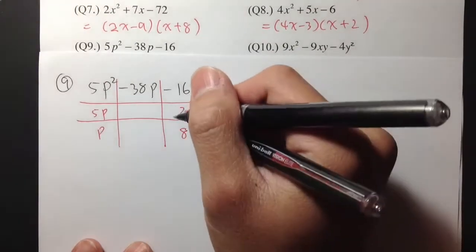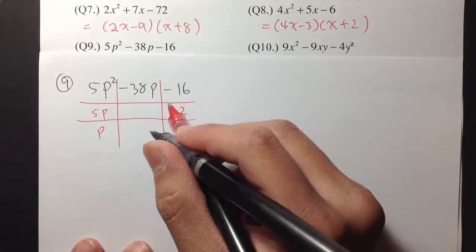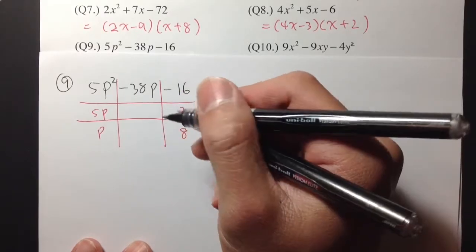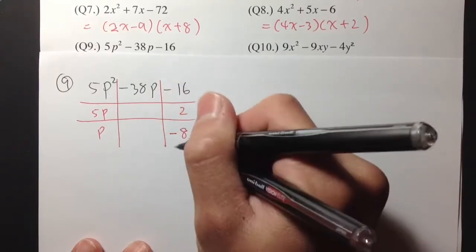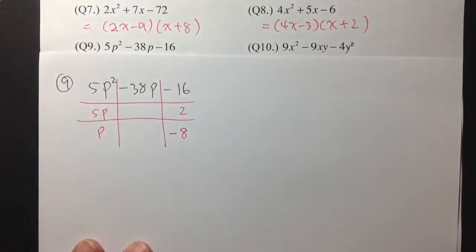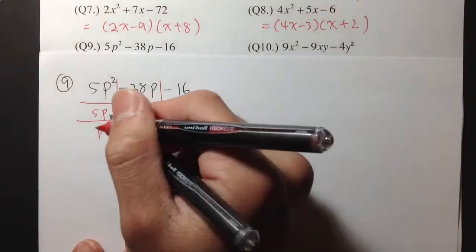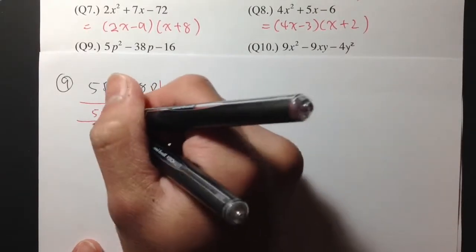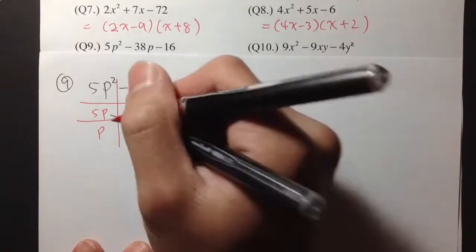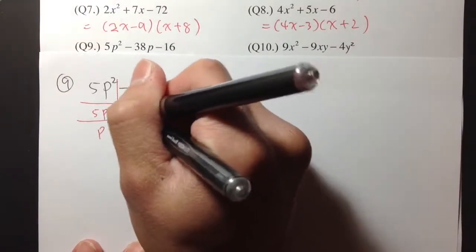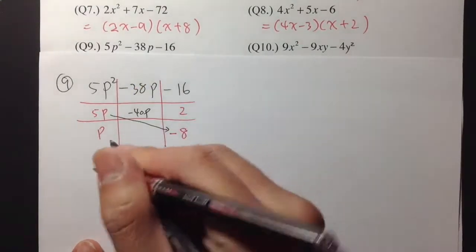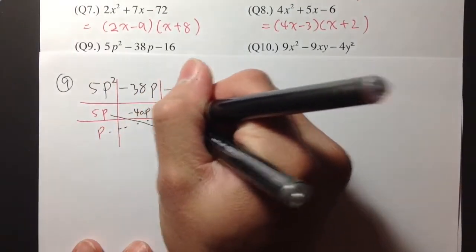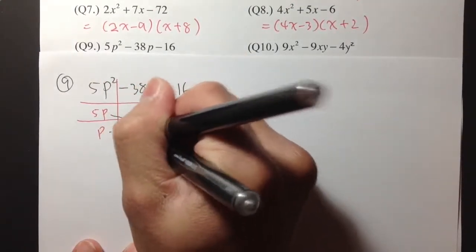And then I need to produce a negative 16, so let me try to make an 8 negative. 5p and negative 8 — we'll multiply them. I get negative 40p. And now I'll take the p, multiply with the 2, and that's exactly just 2p.